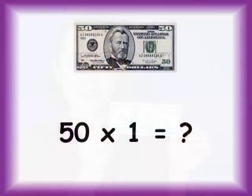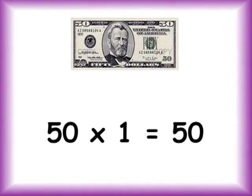The identity property of multiplication works like an ID card. If you show someone your ID card, you see a picture of the same person. For example, if you have one ten dollar bill, you have ten dollars. If you have one hundred dollar bill, then you have one hundred dollars. So, what's 50 times one? You're right, it's 50.